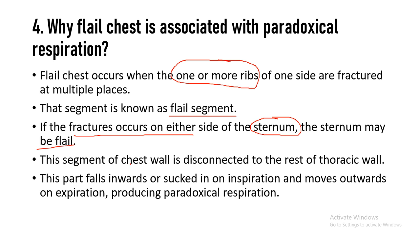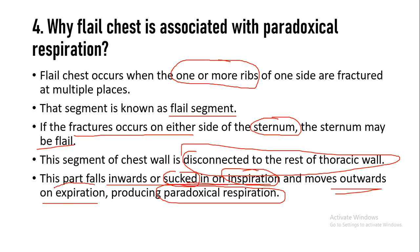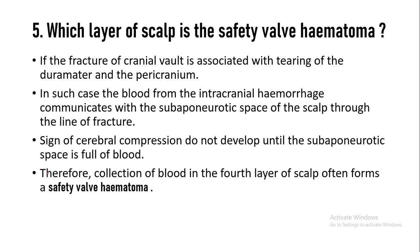If the fracture occurs on both sides of the sternum, the sternum will also become flail. The problem is that this segment is disconnected from the rest of the chest wall, so this part will be sucked inward during inspiration while showing outward movement on expiration. This is paradoxical respiration — because normally during inspiration the chest wall moves outward, and during expiration it moves inward. Here, this segment shows the reverse action, which is known as paradoxical respiration.